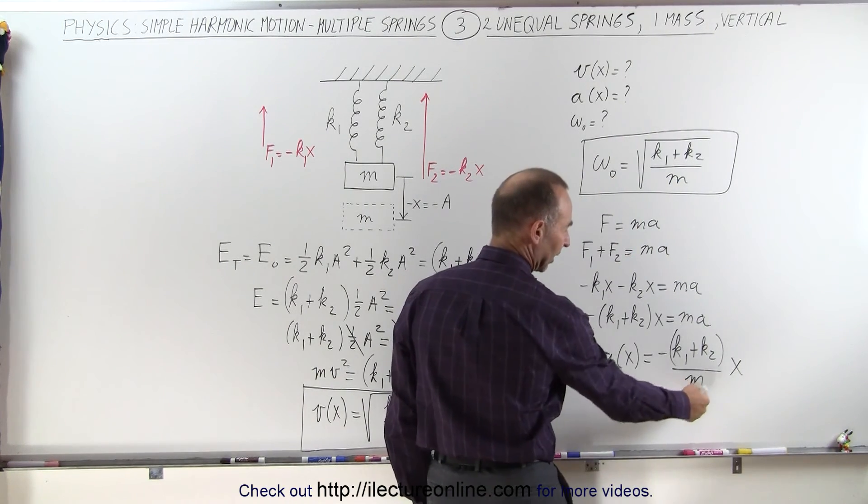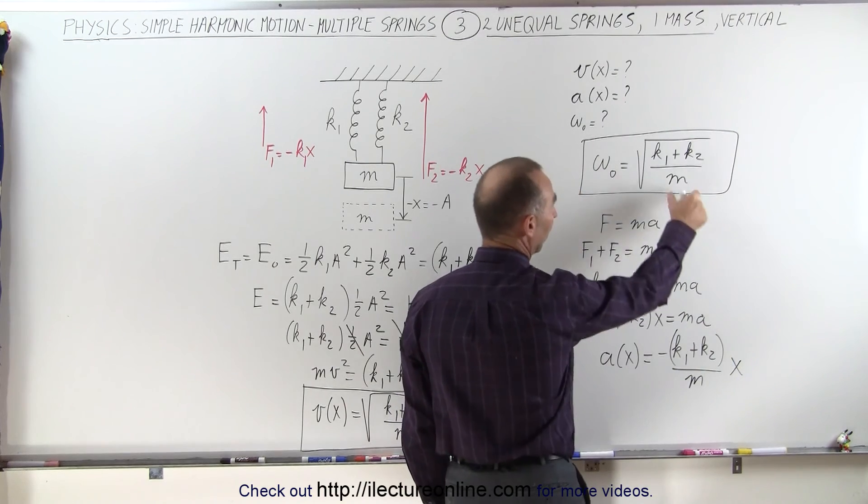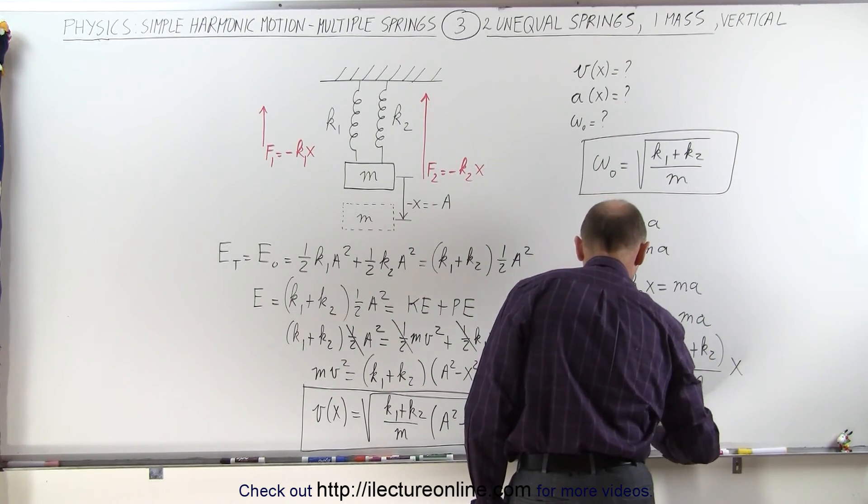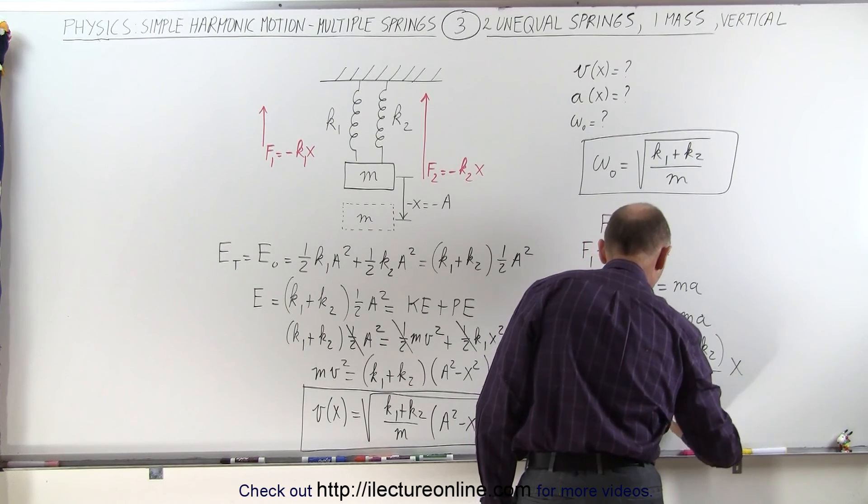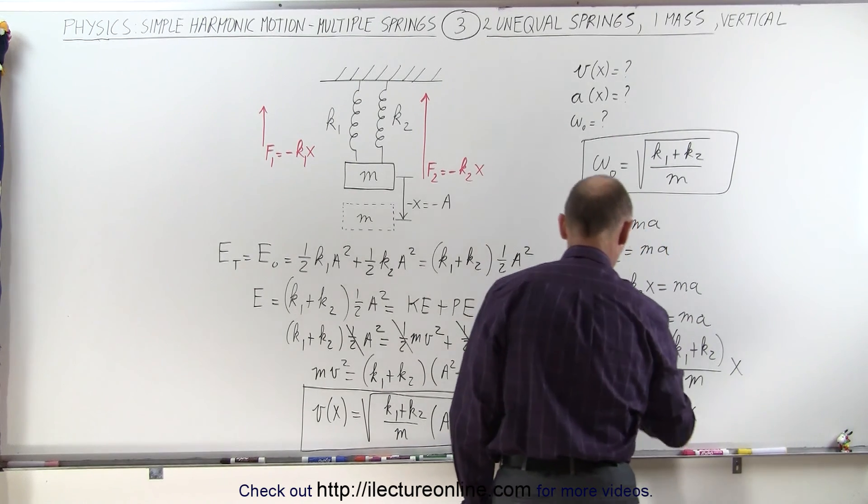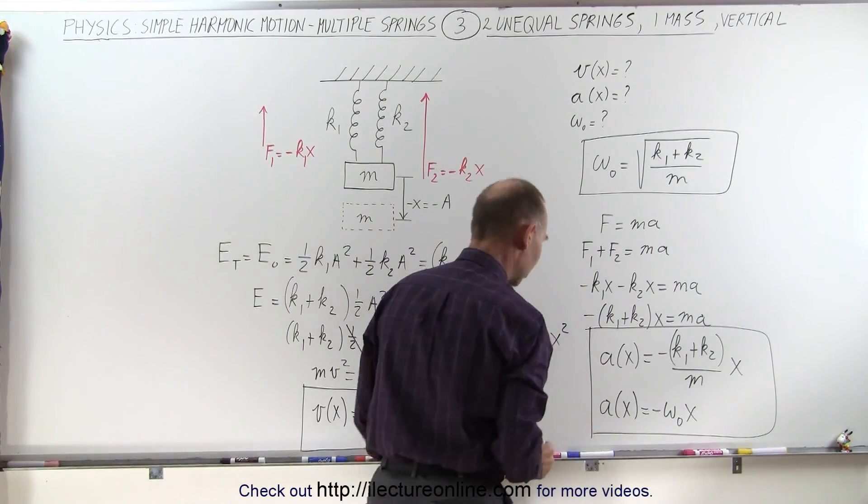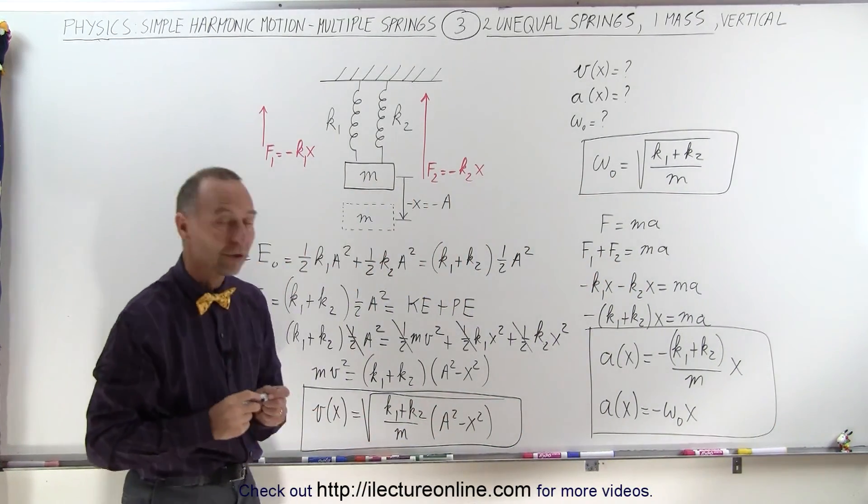And of course, realizing this, that this is the square of this, which means this can also be written that a as a function of x is equal to minus omega sub-naught squared times x. So there's actually two ways in which we can write the acceleration as a function of position.